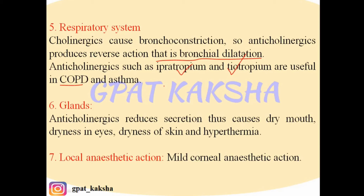On glands, anticholinergics reduce secretion, causing dry mouth, dryness of eyes, dryness of skin, and hyperthermia. Sweating normally helps maintain normal body temperature — just as evaporation leads to cooling. Since anticholinergics reduce secretion and inhibit sweating, they cause elevation of body temperature, especially in children.